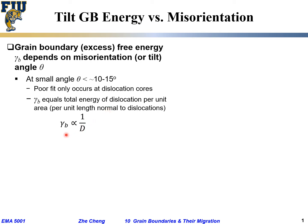In that case, the grain boundary energy would be proportional to 1/D, the inverse of the inter-dislocation distance. Note that capital D here is not the diffusion coefficient; it is the distance between neighboring dislocations in this low angle tilt boundary. So 1/D tells us how frequently we meet a dislocation. From previous discussion, 1/D is proportional to theta over the Burgers vector, b.